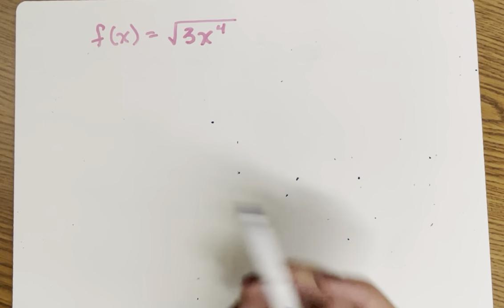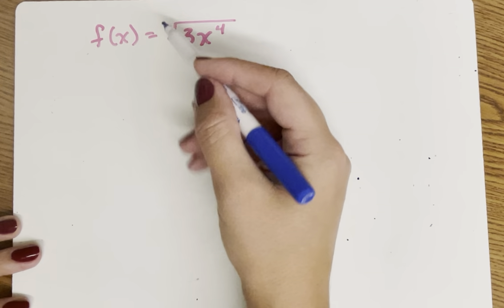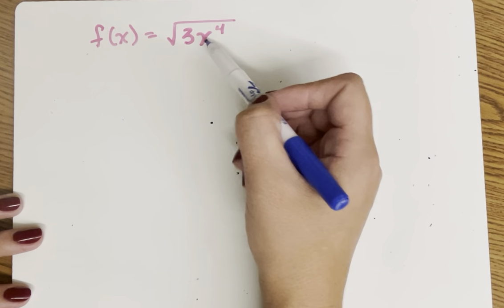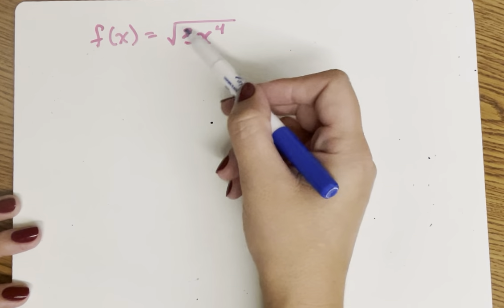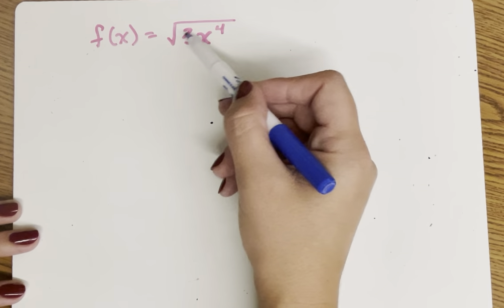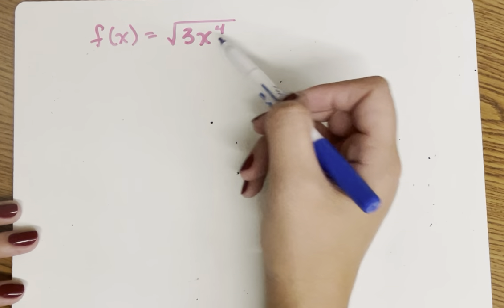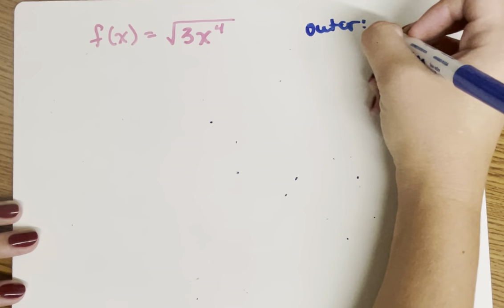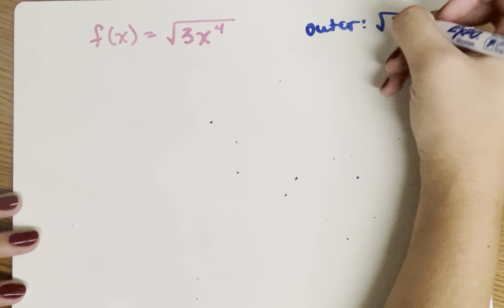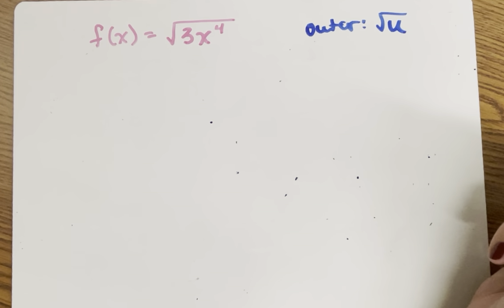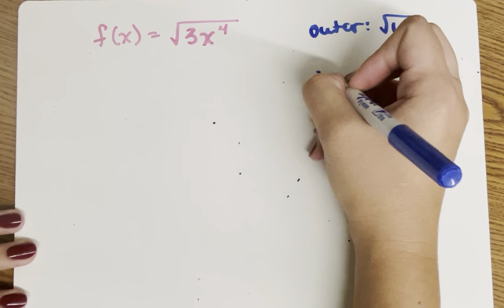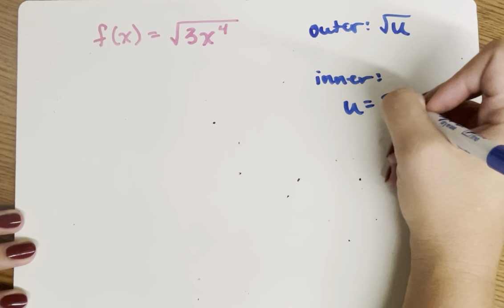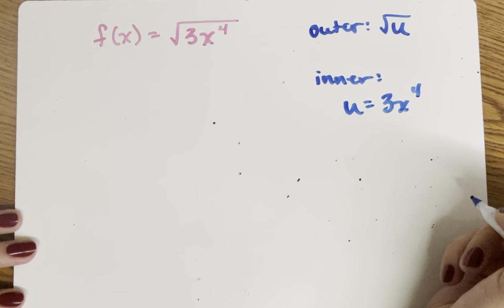Here we have an example of chain rule because I have a square root, so that's my outer function, and inside that radical there's something more than just an x. I have this inner function 3x to the fourth as well. So my outer is the radical — I can think of it as square root of u, and then the inner u is equal to 3x to the fourth.